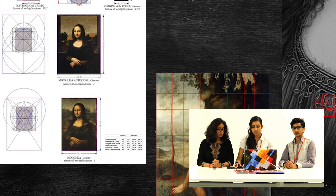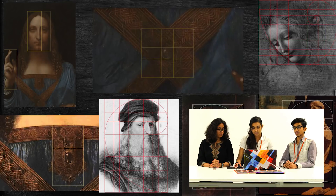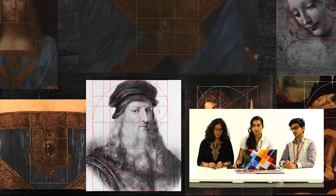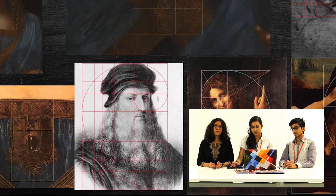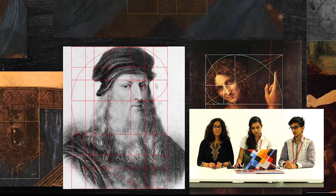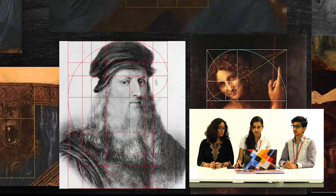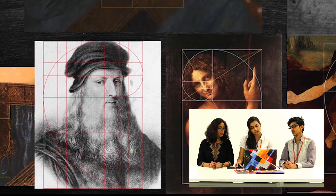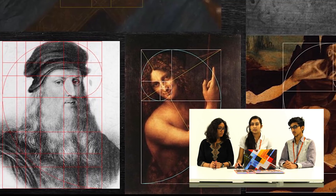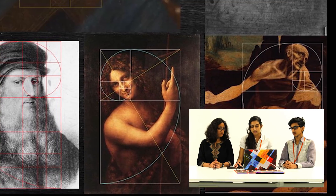Another painting by Da Vinci is his self-portrait, which uses the Golden Ratio starting between his eyebrows and going from his hat to his beard. Another painting by Da Vinci is John the Baptist. You can see his arm pointing upwards, which is actually a use of the Golden Ratio.